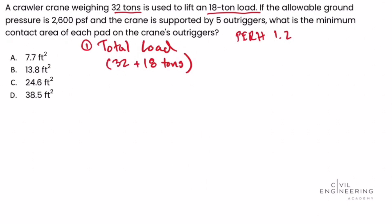So that 1.2 section, we see the unit conversion factor for tons. So 1 ton is equal to 2,000 pounds. And working that math, we get a total load equal to 100,000 pounds.